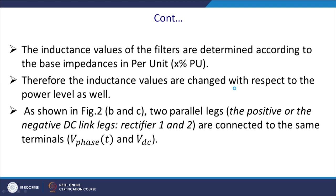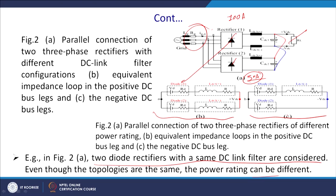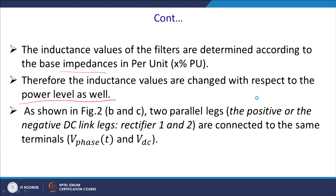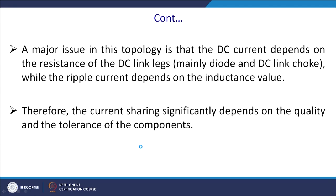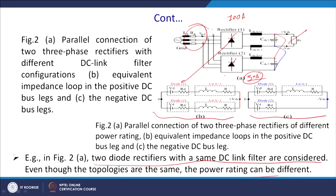The inductance values of the filters are determined according to the base impedance in per unit. Therefore, inductance values change with respect to the power level — generally, inductance is specified as 5% in per-unit value. Once you change the power handling capability, your design constraints also change. In figures 2b and 2c, the positive or negative DC links of rectifier 1 and 2 are connected to the same terminal, with the major issue being that DC output current depends on the resistance of the DC link, mainly the diode and DC link choke.